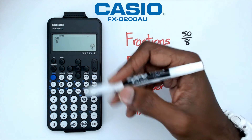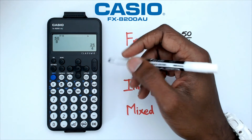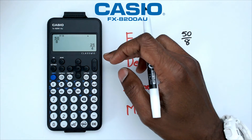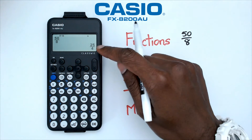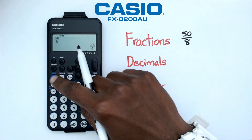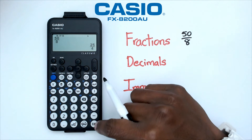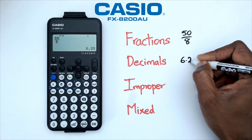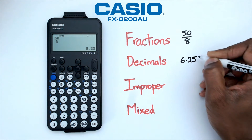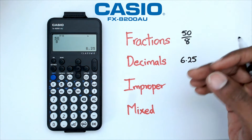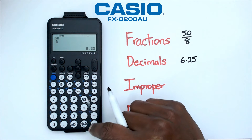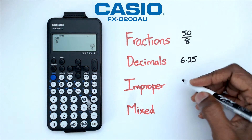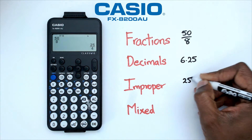When you press equals, the calculator automatically simplifies the fraction. Now we want to see what this fraction is as a decimal, so we're going to use the shortcut Shift + EXE, and that gives us 6.25. This fraction is already an improper fraction — simplified it's 25 over 4.